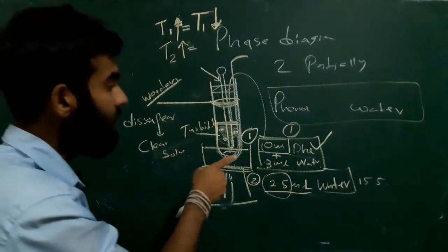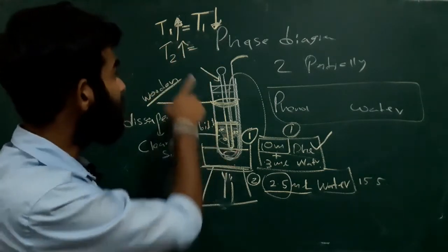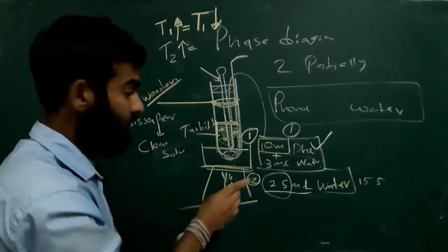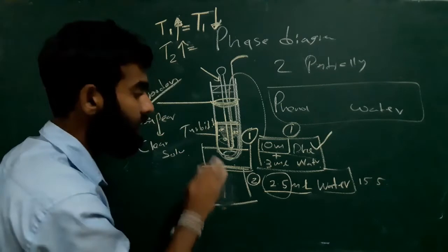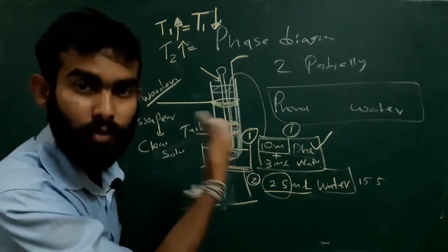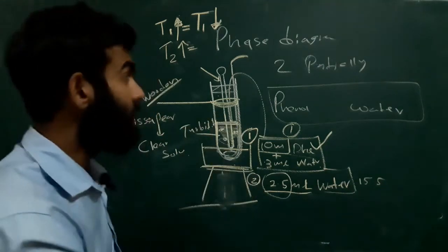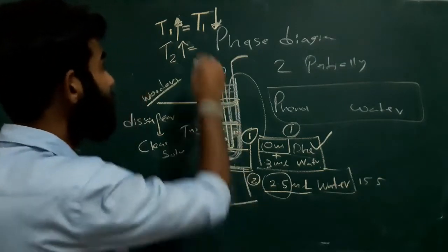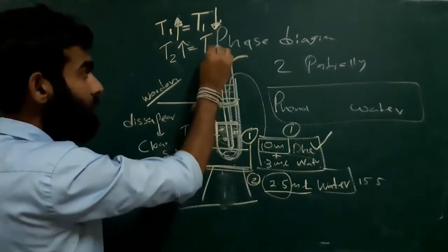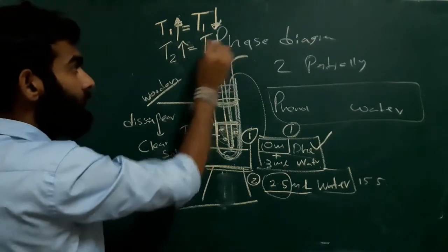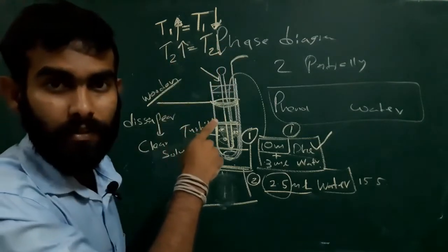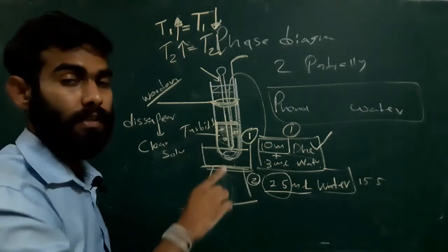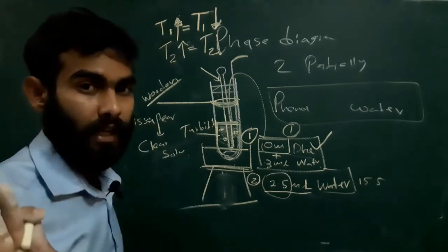When heating, we observe this temperature. After seeing the clear solution, we remove the Bunsen flame and allow the solution to cool. When cooling, we can see a reappearance of turbidity. We read that temperature. The reappearance temperature should equal the disappearance temperature. If not, you made a mistake.